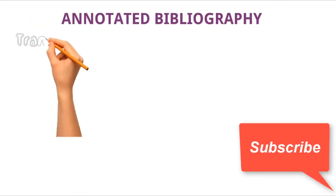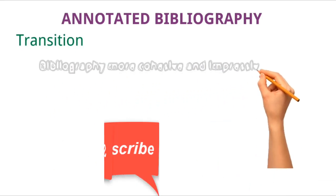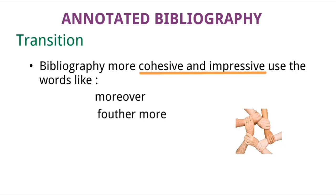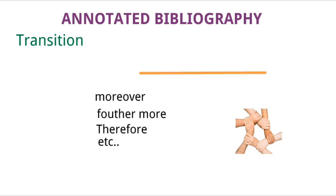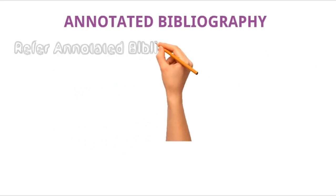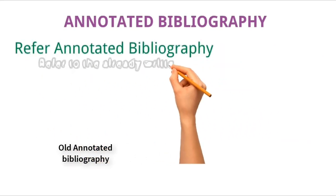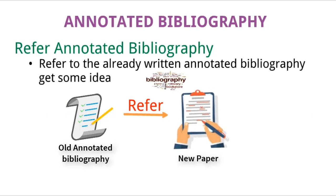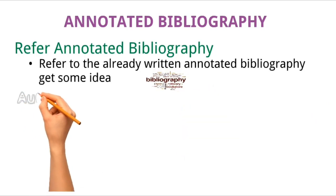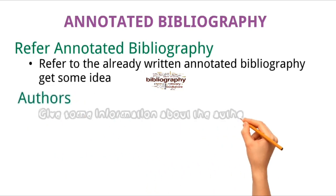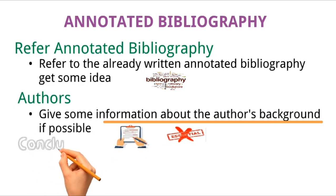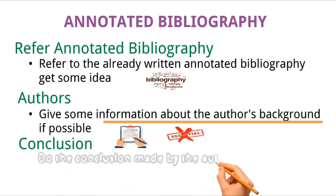Next, use transition words. To make your annotated bibliography more cohesive and impressive, you can use words like moreover, furthermore, therefore, etc. You should also always refer to already written annotated bibliographies to get an idea of how they can be written. Additionally, you can give information about the author's background if possible, though it is not necessary. Lastly, include the conclusion made by the author for the research work.